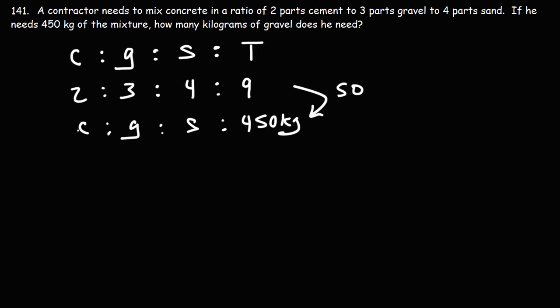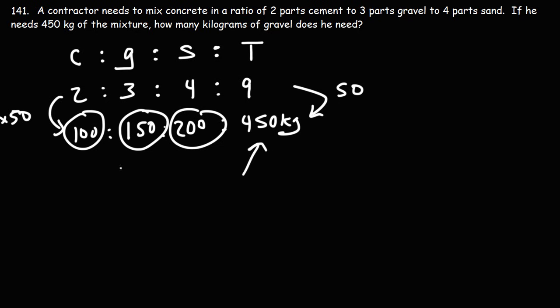So if we want to find everything else, we just got to multiply those numbers by 50. So two times 50 will give us 100. Three times 50 will give us 150. Four times 50 will give us 200. And if you add 200 plus 100, that's 300 plus 150, that will give you the total of 450.